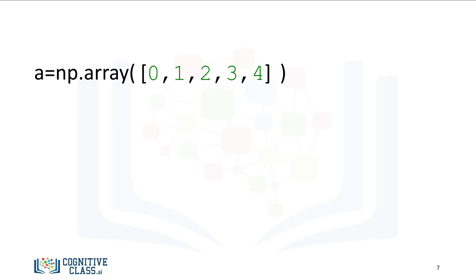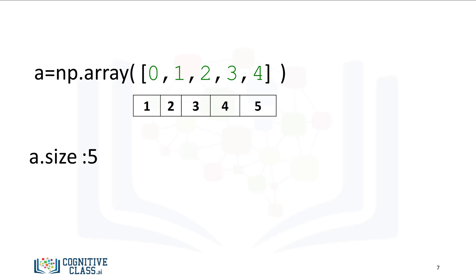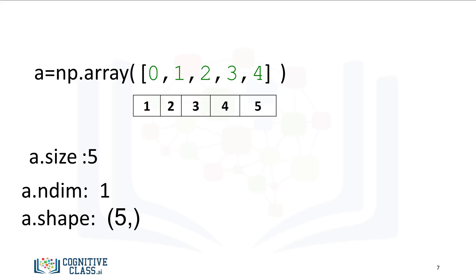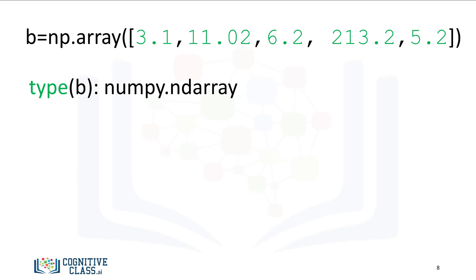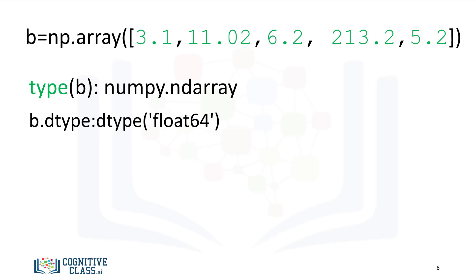Let's review some basic array attributes using the array a. The attribute size is the number of elements in the array. As there are five elements, the result is five. The attribute ndim represents the number of array dimensions, or the rank of the array, in this case 1. The attribute shape is a tuple of integers indicating the size of the array in each dimension. We can also create a NumPy array with real numbers; the dtype will show float64. Check out NumPy.org for more attributes.